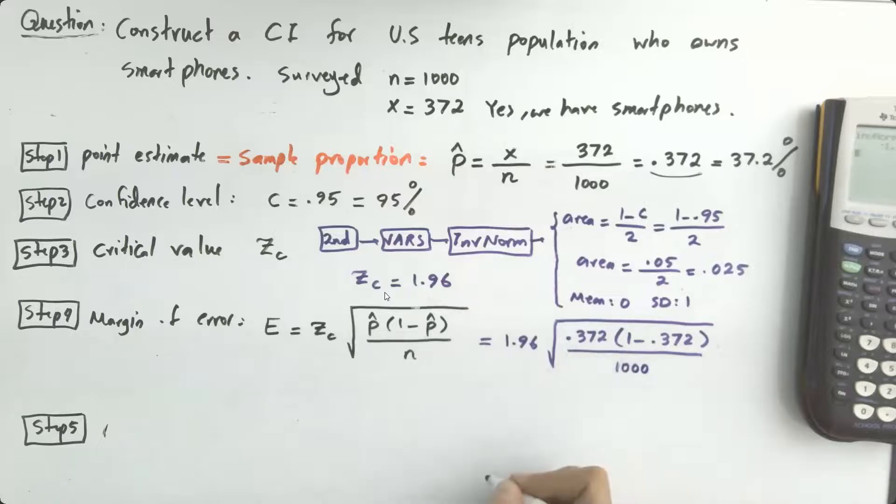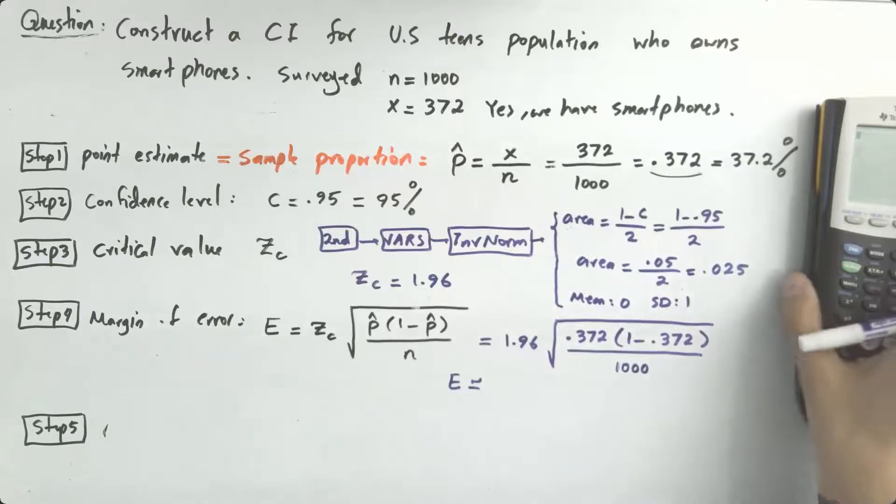p hat, 0.372, parenthesis, 1 minus 0.372, divided by n. n is a thousand. There are a thousand people in my survey. Okay, if I do the computation, E is approximately, what number? Please do the computation and give me